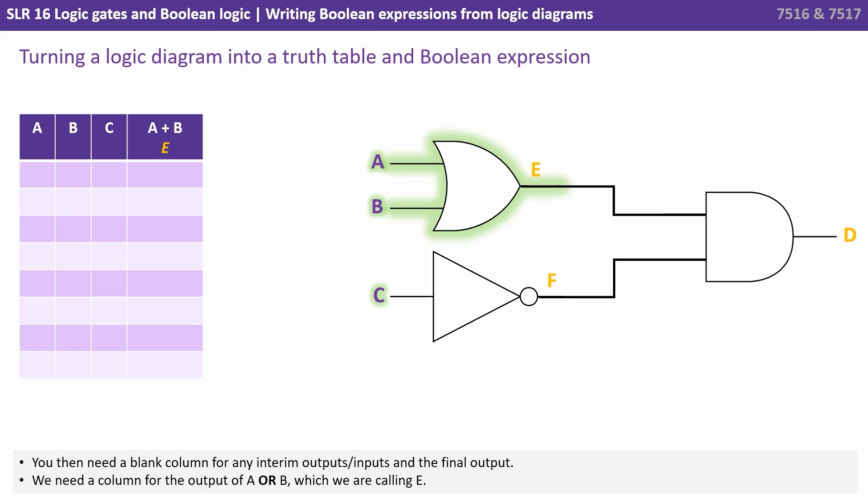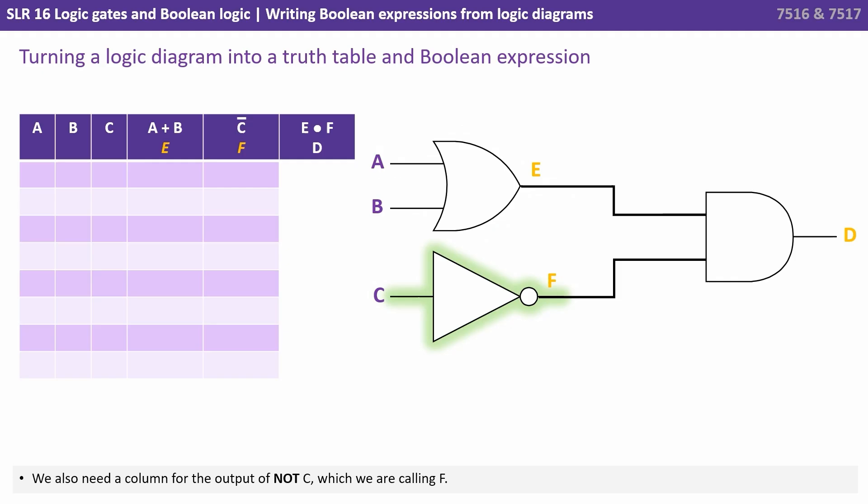We need a column for the output of A or B which we're going to call E. We also need a column for the output of NOT C which we're calling F. You can substitute any letters you like for the various inputs and outputs shown here.